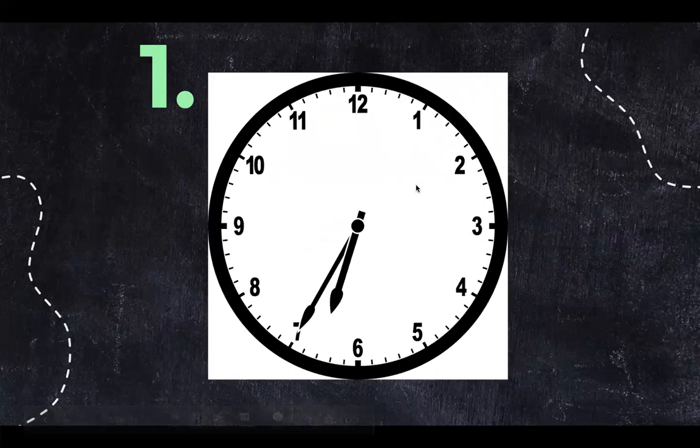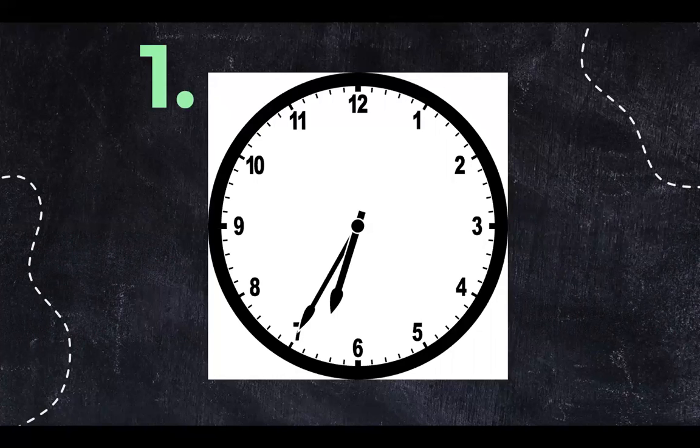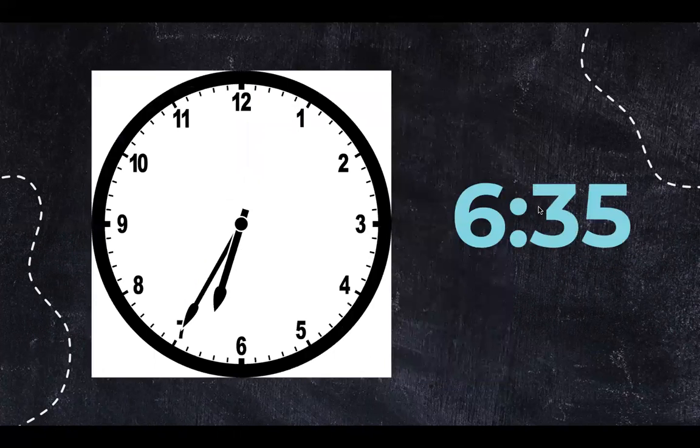Number one. What time is it on the clock? Write the hour first, then two dots and then the minutes. It is six thirty-five.